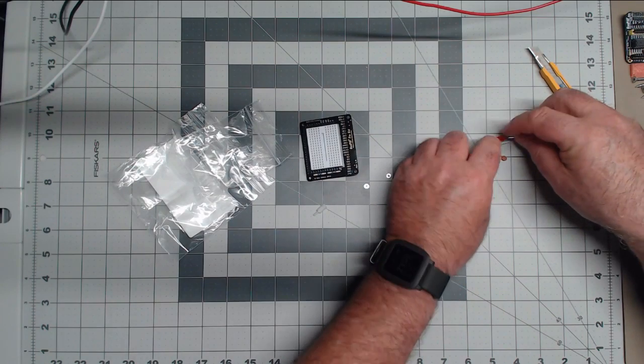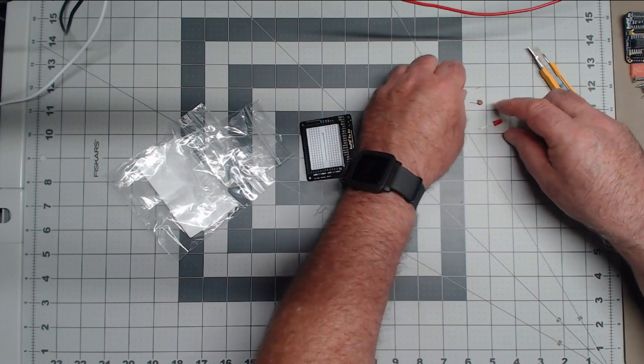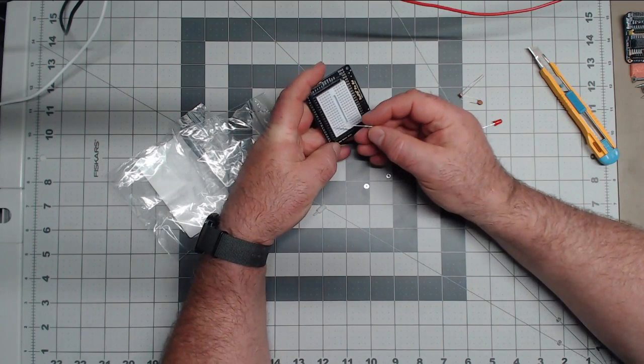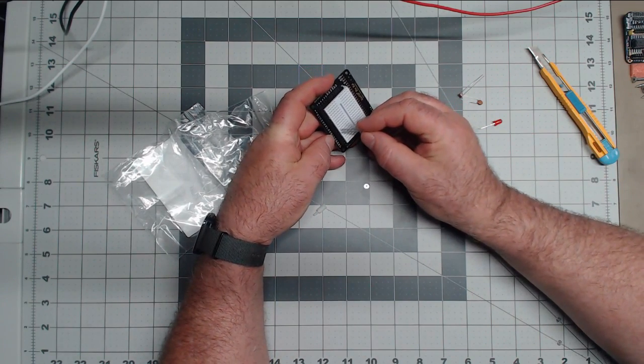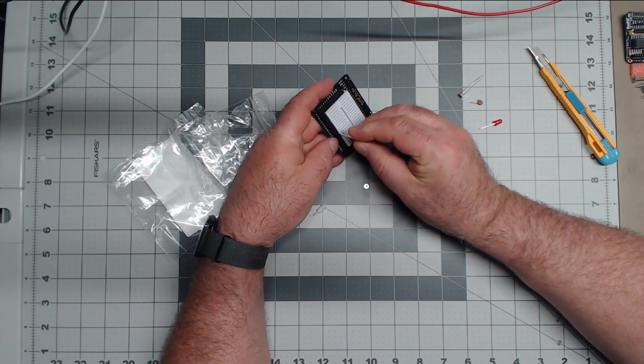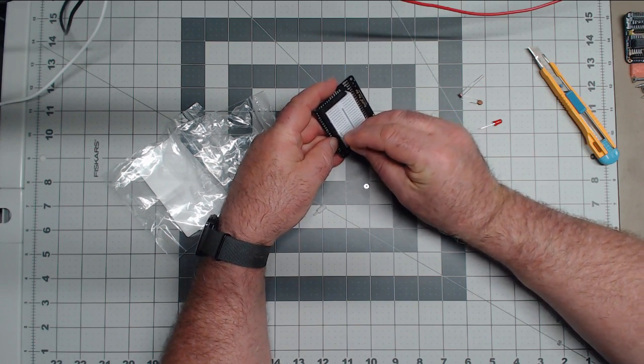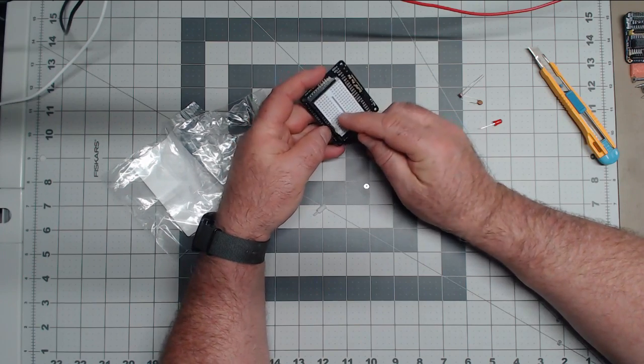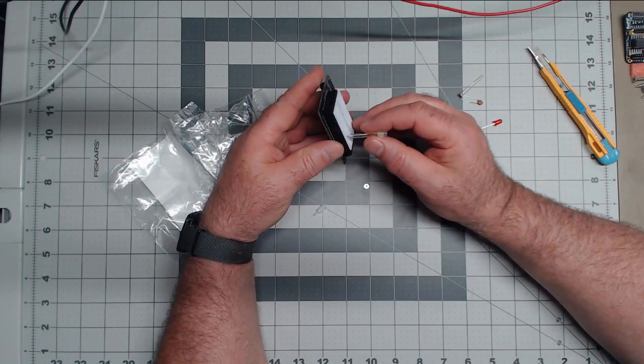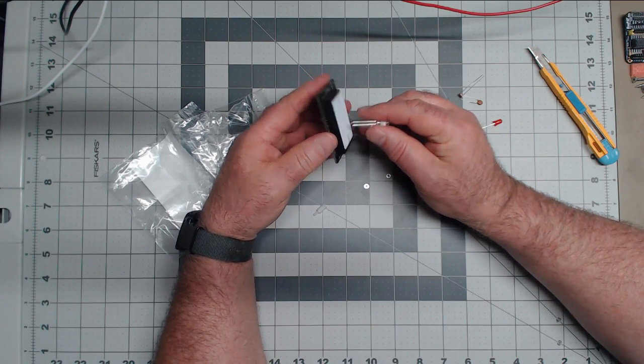But basically, you would just stick something in your breadboard, stick it in a GPIO pin. Of course, I don't know whether that's the right polarity. And then you would just run a resistor. Oh, it's because I'm running this guy.